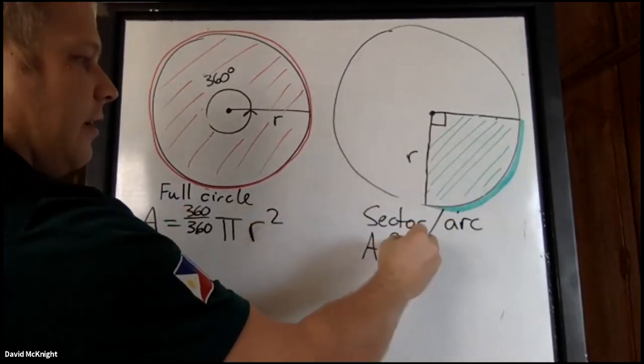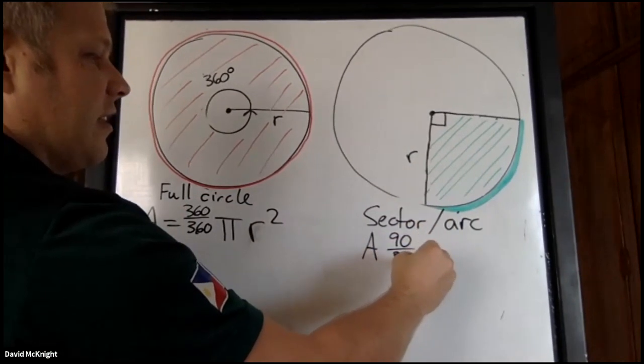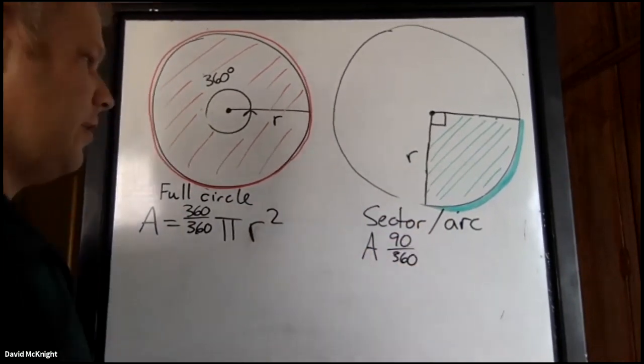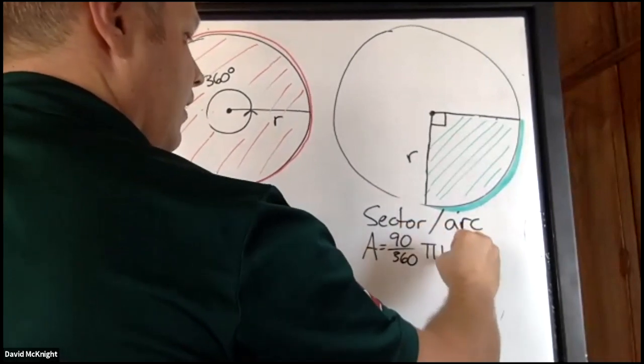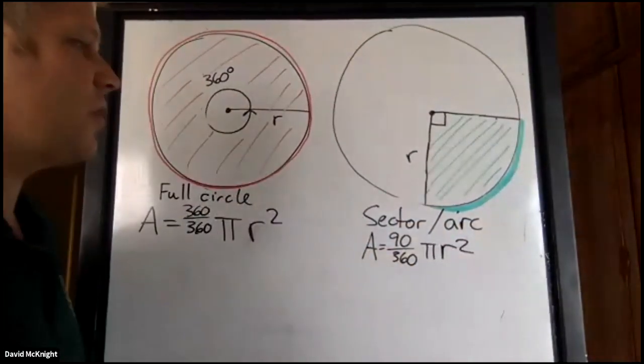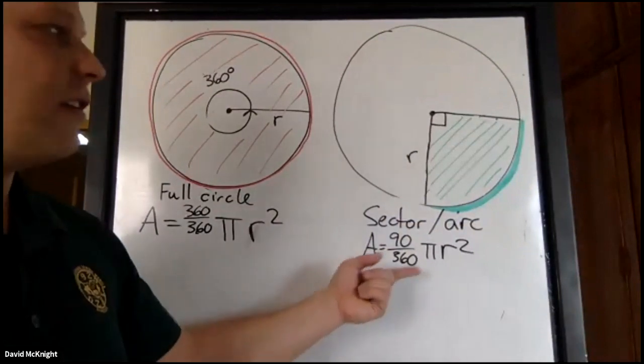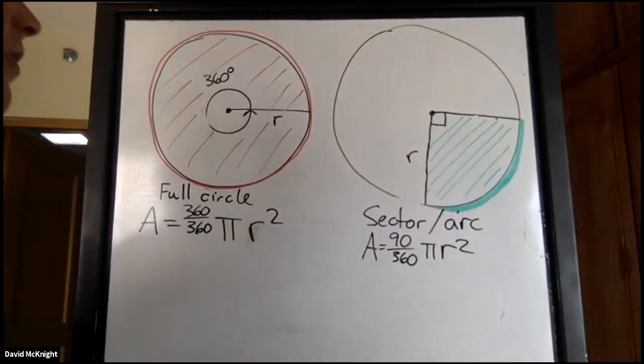Well, we have 90. And 90 out of 360 is actually a quarter times π r squared. So that's the area. It's just whatever fraction is shaded. You need to have that angle there, right?